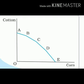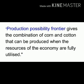This curve is what we call the Production Possibility Frontier. The Production Possibility Frontier gives the combination of corn and cotton that can be produced when the resources of the economy are fully utilized. When all available resources are completely utilized, the economy produces a particular combination of corn and cotton — that's what we call the Production Possibility Frontier.